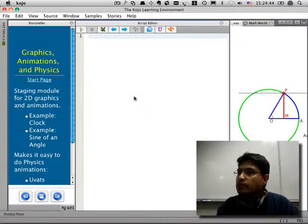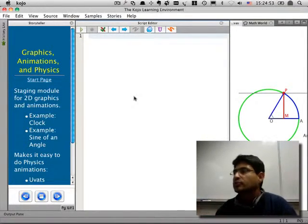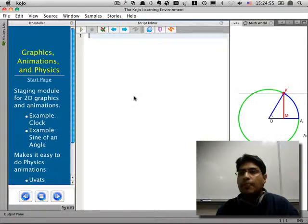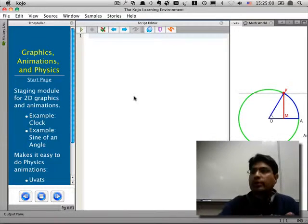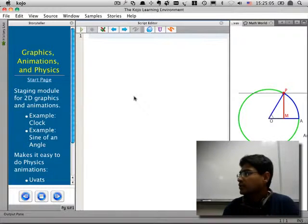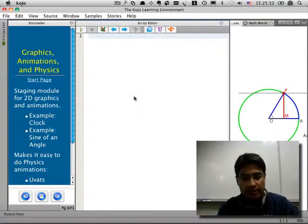I'd like to talk about user defined commands. Could somebody name a few commands within Kojo that you know of? Forward. Anything else? Repeat. Clear. So these are predefined commands within Kojo that you can use right away. But you also have the ability to create your own commands within Kojo. And the way you do that is like this.